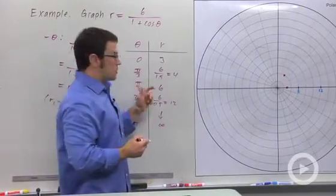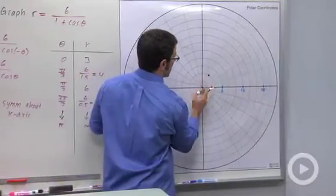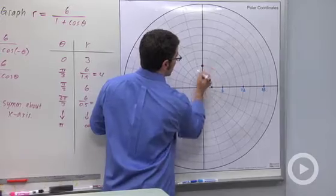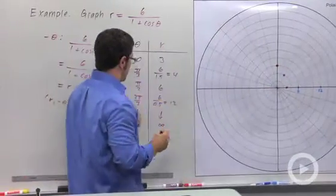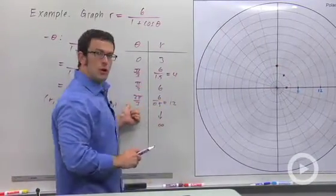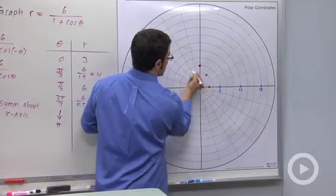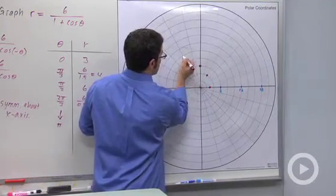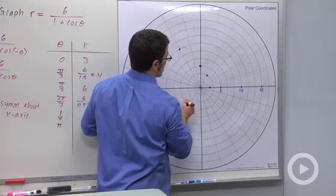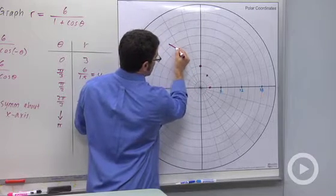Then, 6 pi over 2. Pi over 2 is this direction, and I go 6. That takes me to here. And finally, I have 12, 2 pi over 3. 2 pi over 3 is this direction. This is 6, 8, 10, 12. So the graph looks something like this.